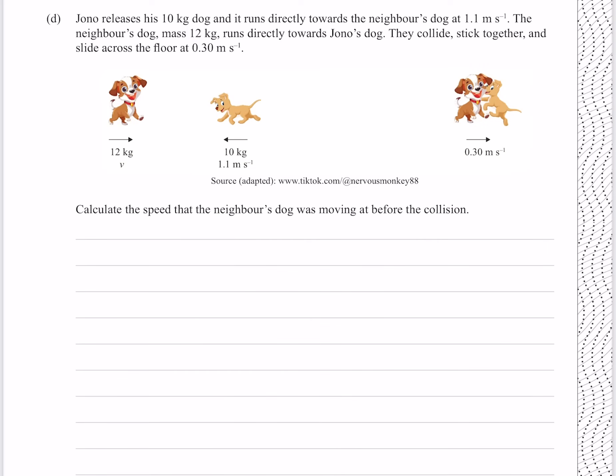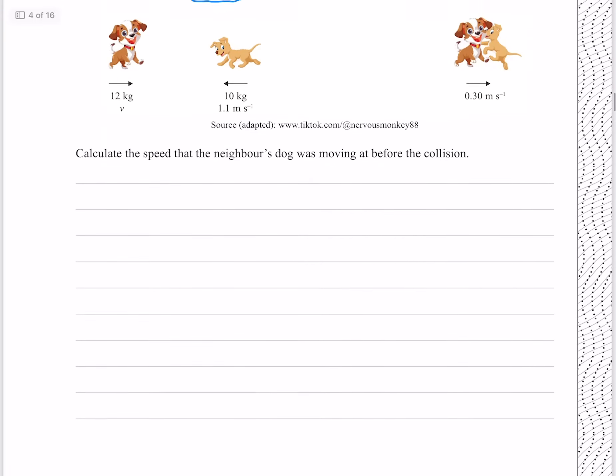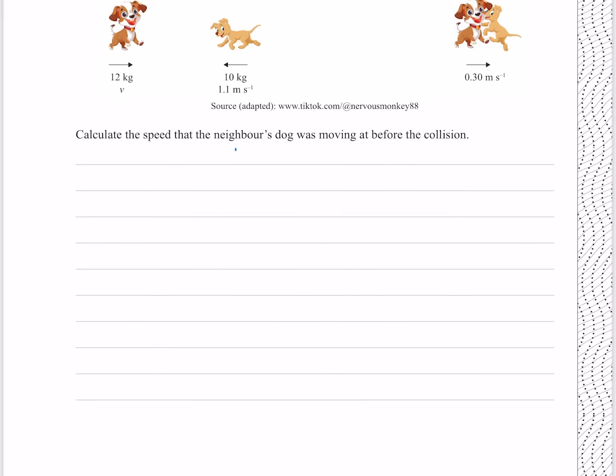Jono releases his 10 kilogram dog, and it runs directly towards the neighbor at 1.1 meters per second. The neighbor's dog, mass 12 kilograms, runs directly towards Jono's dog. They collide, stick together, and slide across the floor at 0.3 meters per second. Calculate the speed that the neighbor's dog was moving at before the collision. For this question, we need to use conservation of momentum, which is that the momentum initially must equal the momentum finally.